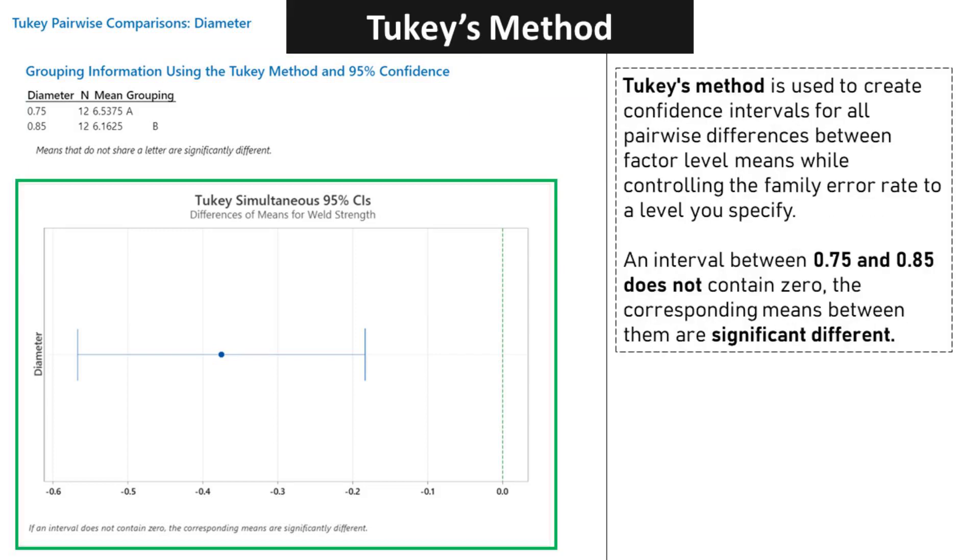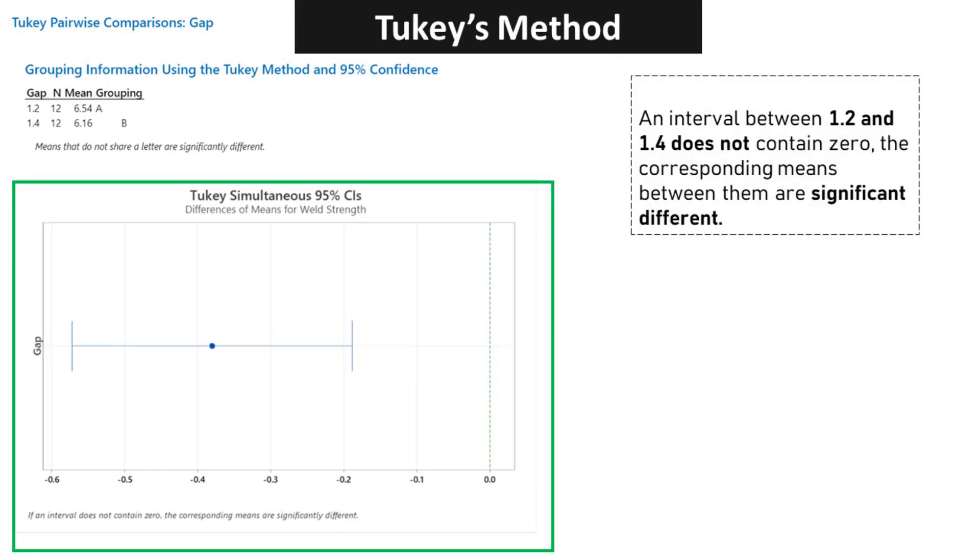Tukey's method is used to create confidence intervals for all pairwise differences between factor level means while controlling the family error rate to a level you specify. An interval between 0.75 and 0.85 does not contain 0, so the corresponding means between them are significantly different. An interval between 1.2 and 1.4 does not contain 0, so the corresponding means between them are significantly different.